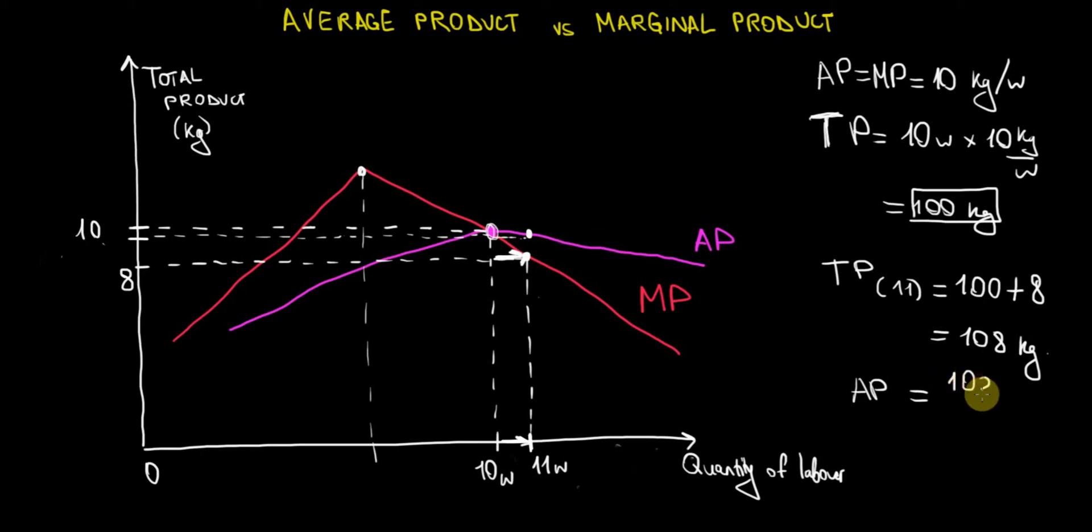108, the total product of the 11 employees divided by 11 employees that we are currently hiring is going to give us 108 divided by 11, which equals 9.8. So the average product is going to be 9.8 kilograms per worker at that given level, and it's exactly corresponding to our curve. It's slightly less than 10.